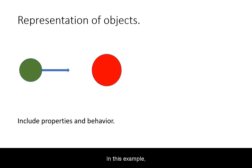In this example, the property of mass is represented by changing the size of the circle representing the object. The magnitude of the velocity can also be represented by changing the size of the arrow.